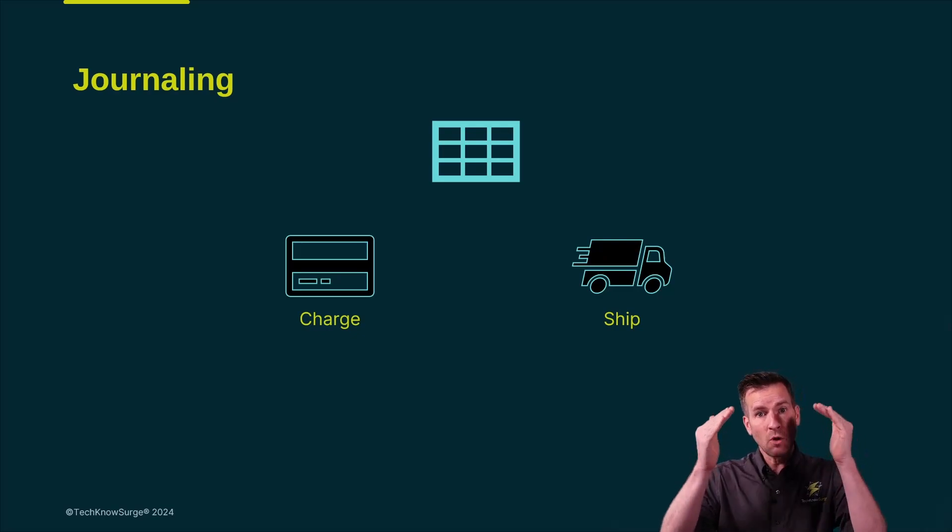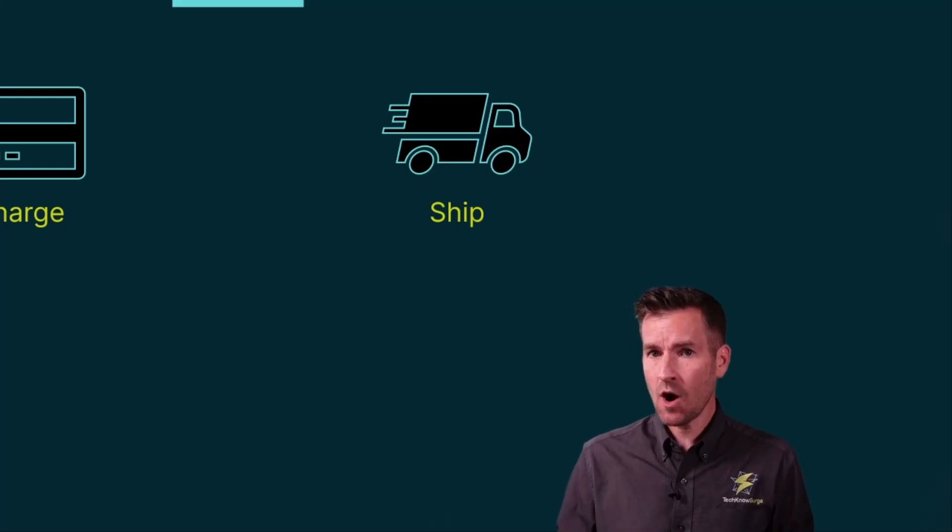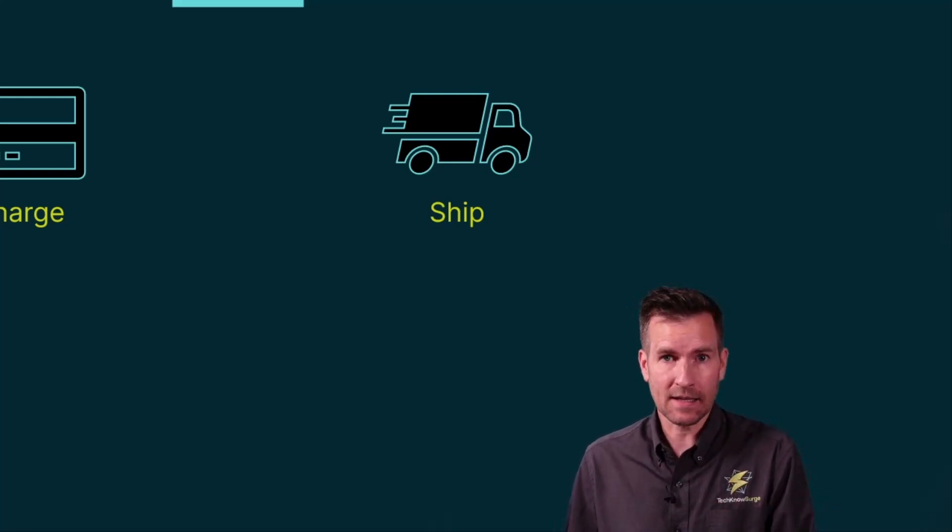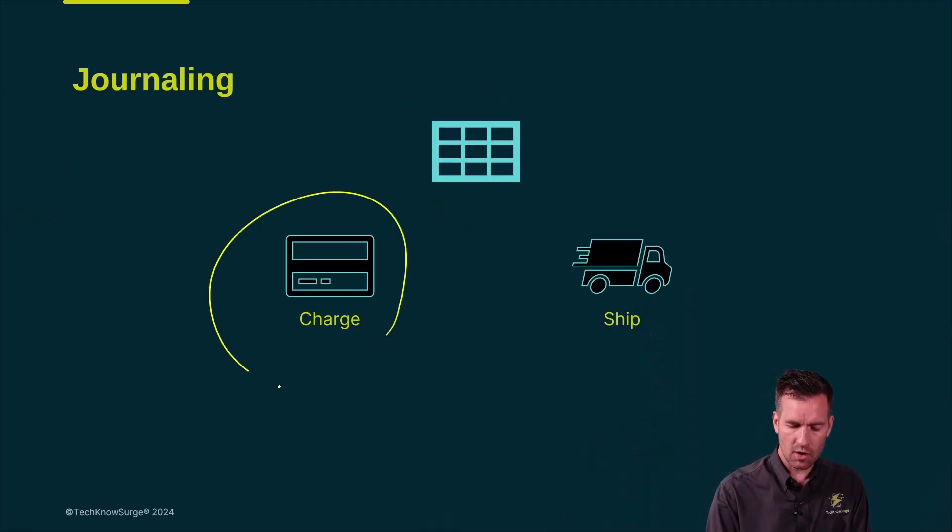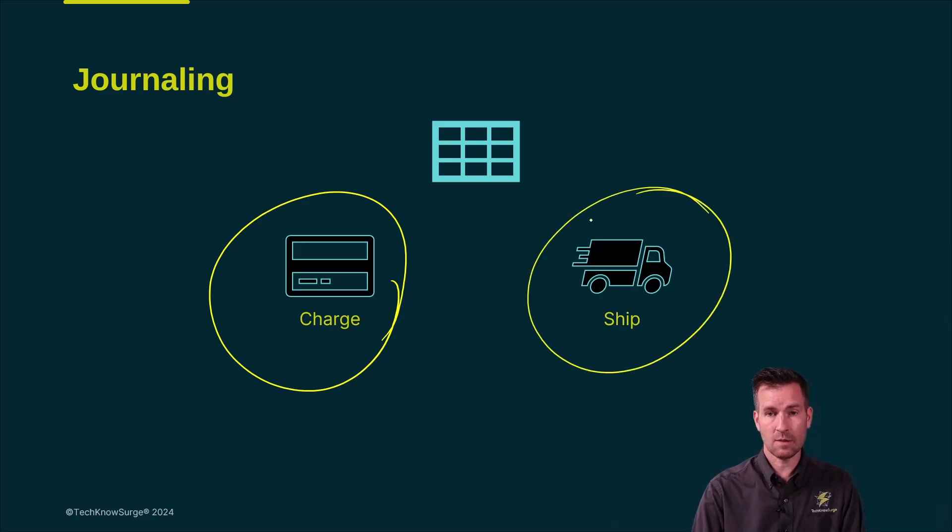In your processes, there's multiple things that have to happen. For instance, let's say we are selling something online and we want to charge the customer and then we're going to ship a product to them. So we're just going to keep it simple and say there's two steps with this.